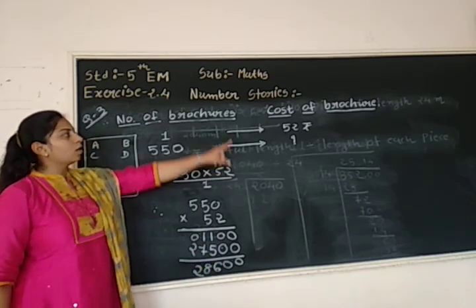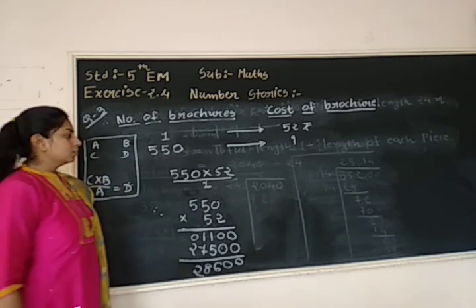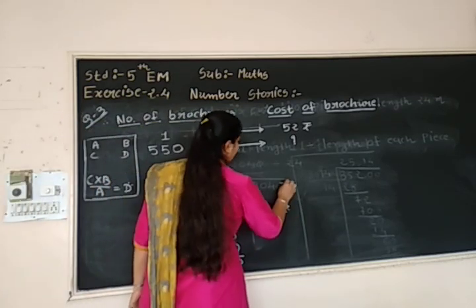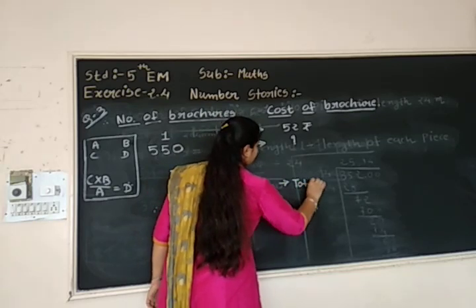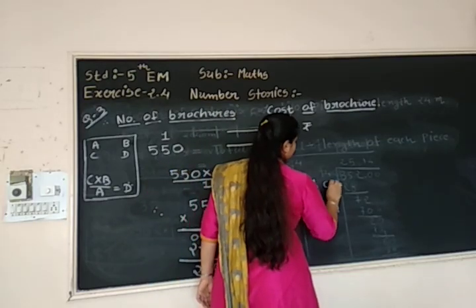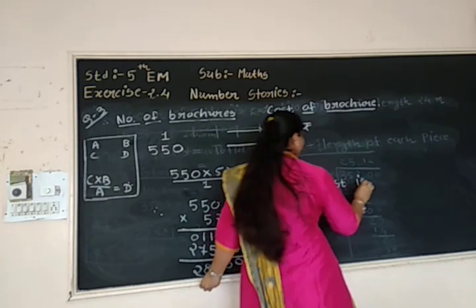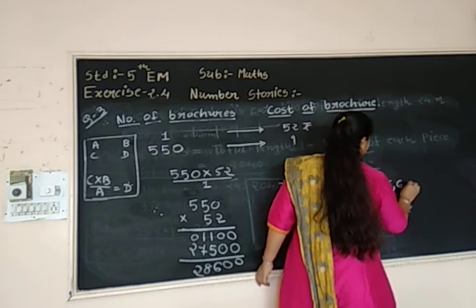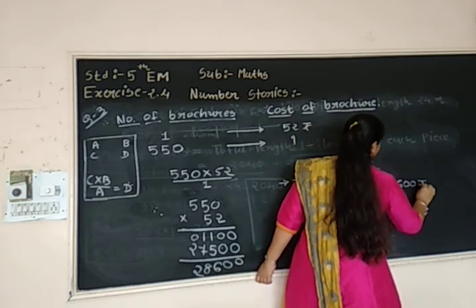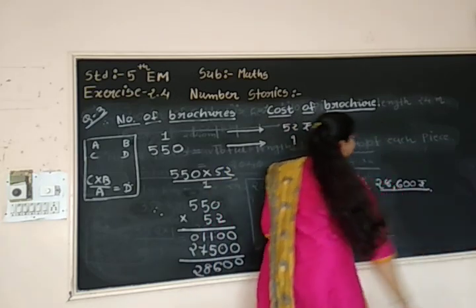So that is now the total cost of brochures. So answer. How do you write the answer? Total cost is 28,600 rupees. That is our answer.